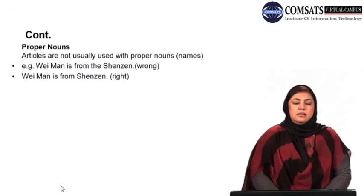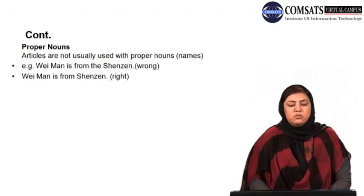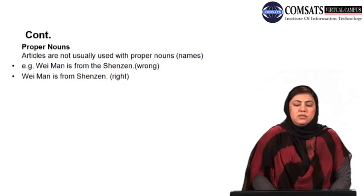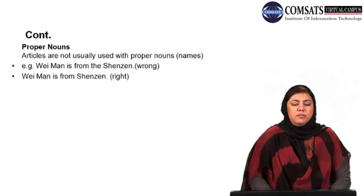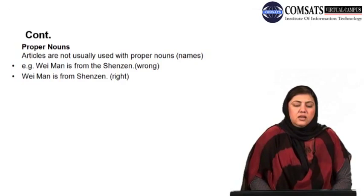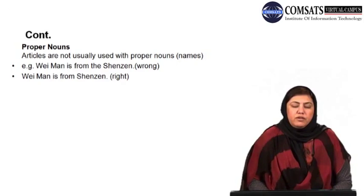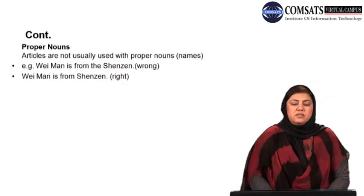Another area of common errors is when it comes to proper nouns. Articles are not usually used with proper nouns — that is, with names. For example, 'We man is from the Shenzhen' is incorrect; 'We man is from Shenzhen' is correct. So proper nouns — whether it is the name of a person, a group, or a place — would not take any article before them.